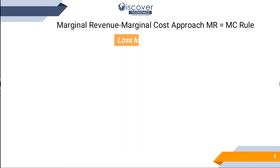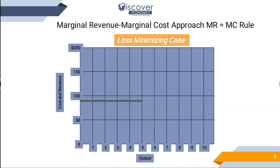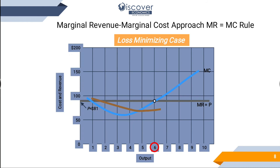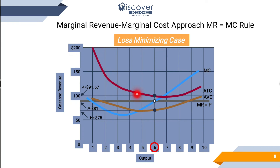Now let's see how we face a loss. You keep the same things: put quantities and prices on the axes, draw P equals AR equals MR, then draw the MC line and touch it. Then make the line of average variable cost. What you want to show here is a loss. The average revenue line is below the average total cost. So the difference between average total cost and average revenue is your loss.